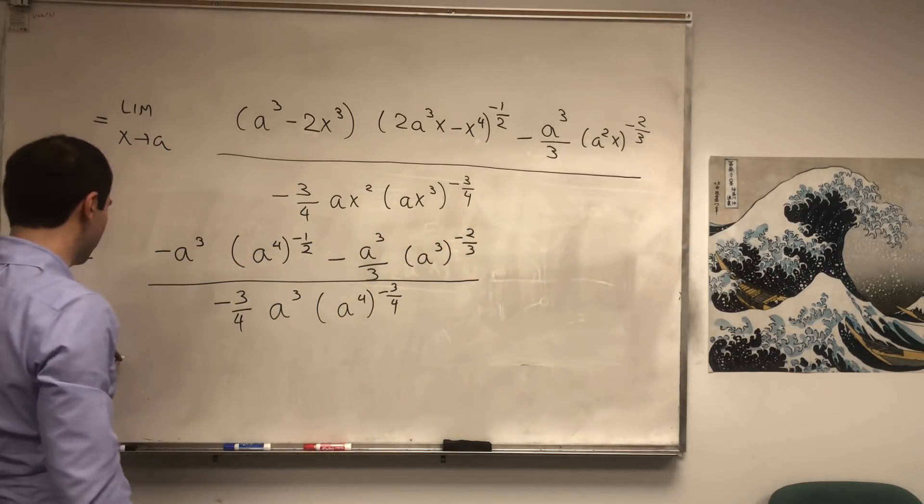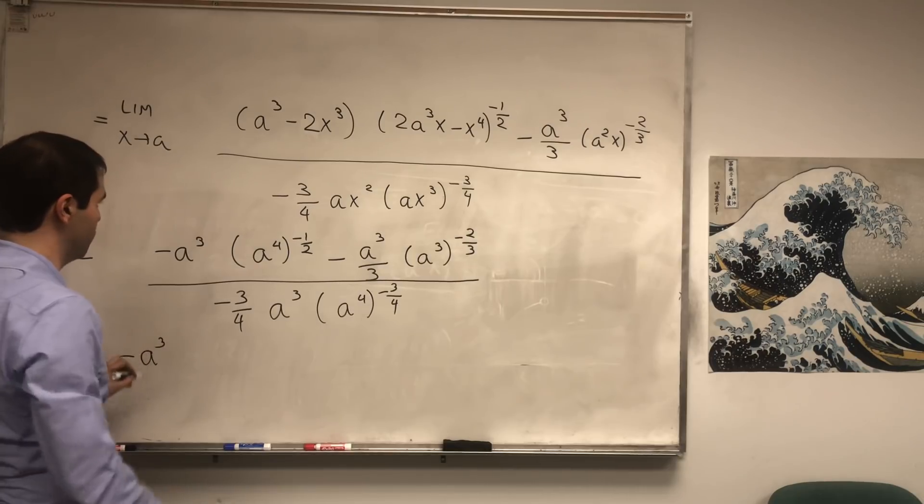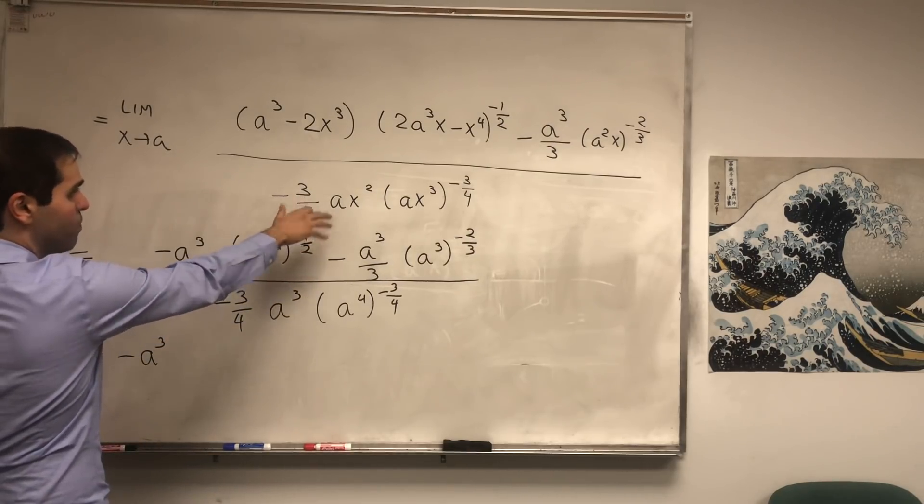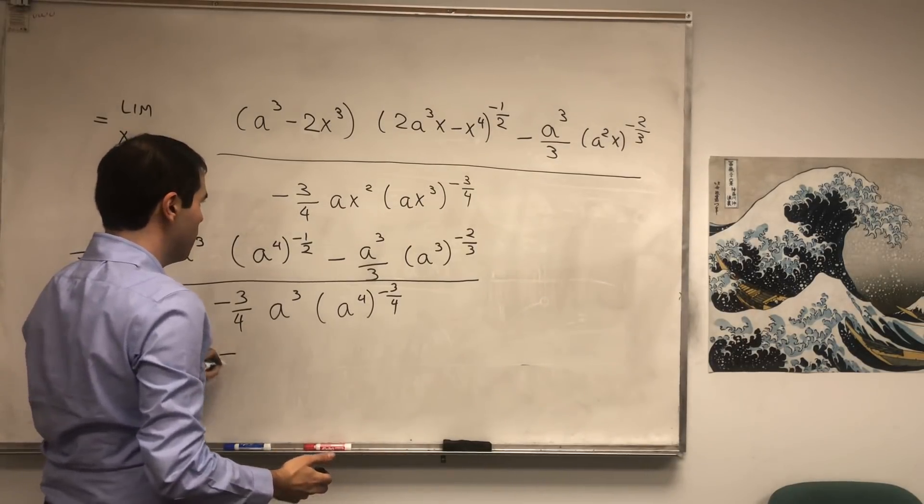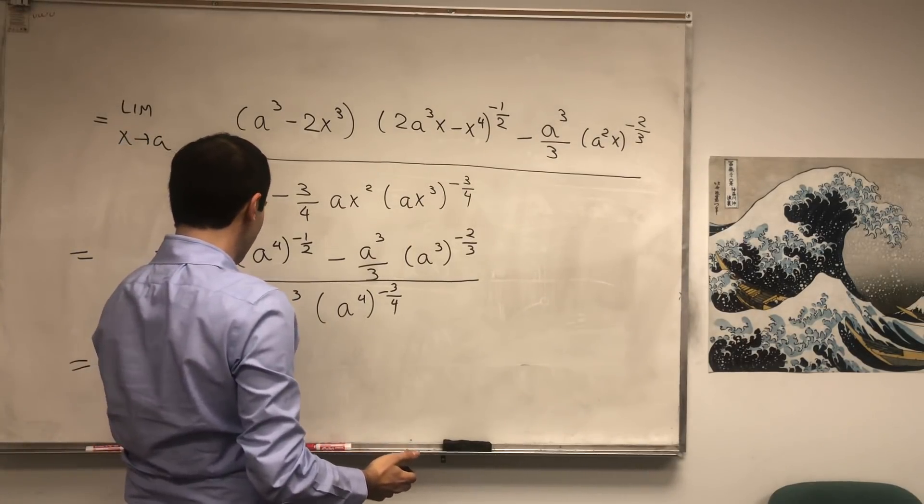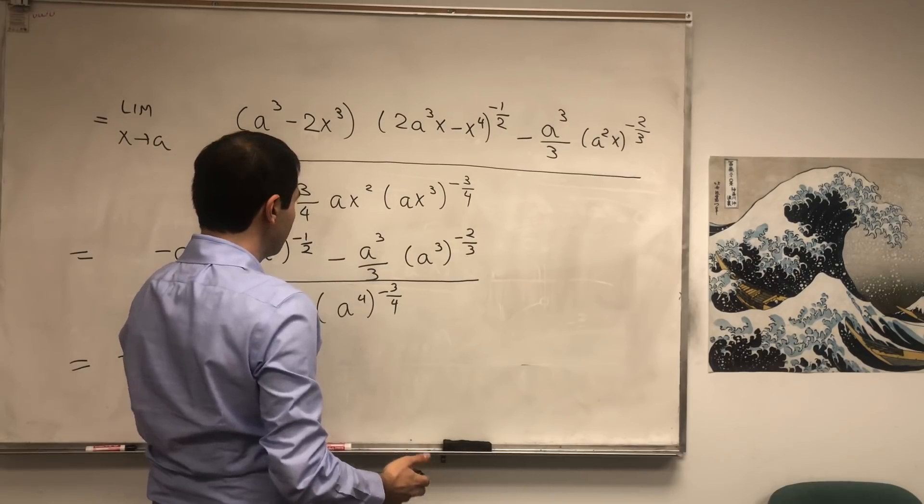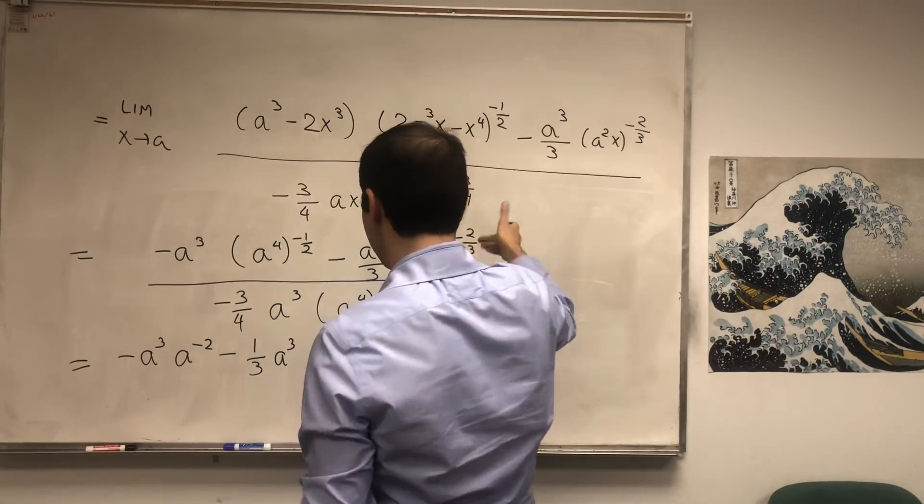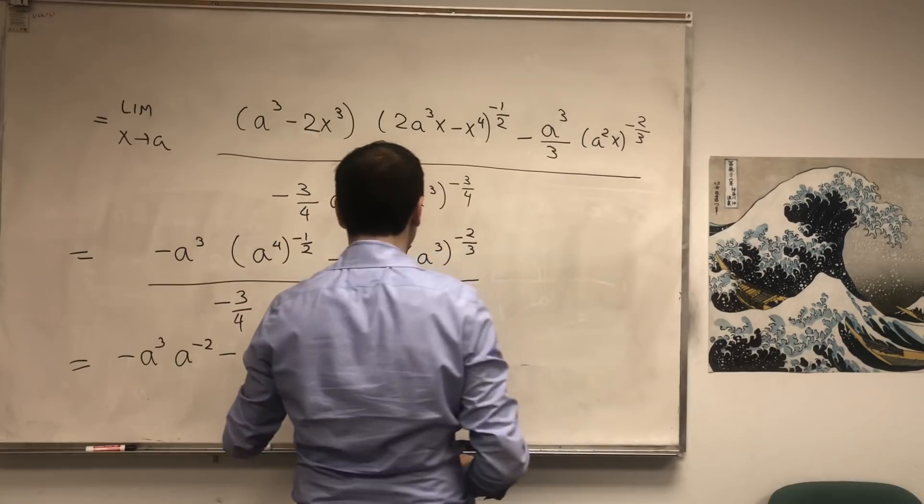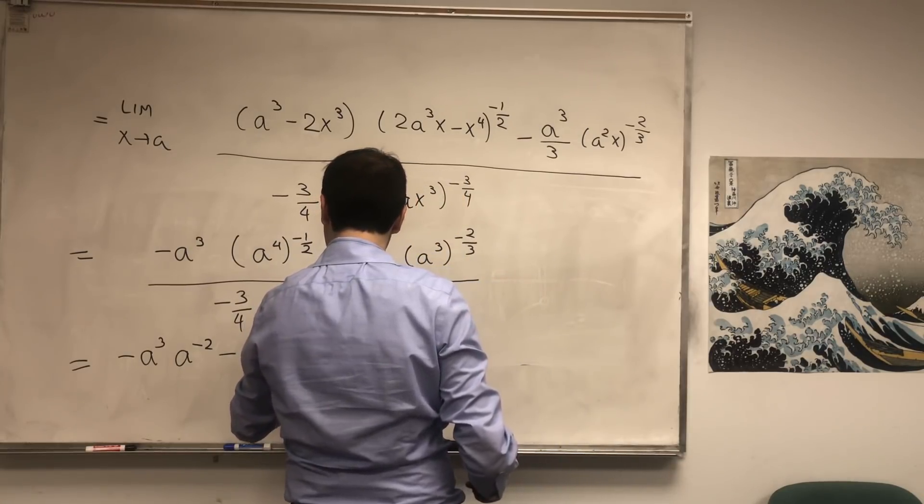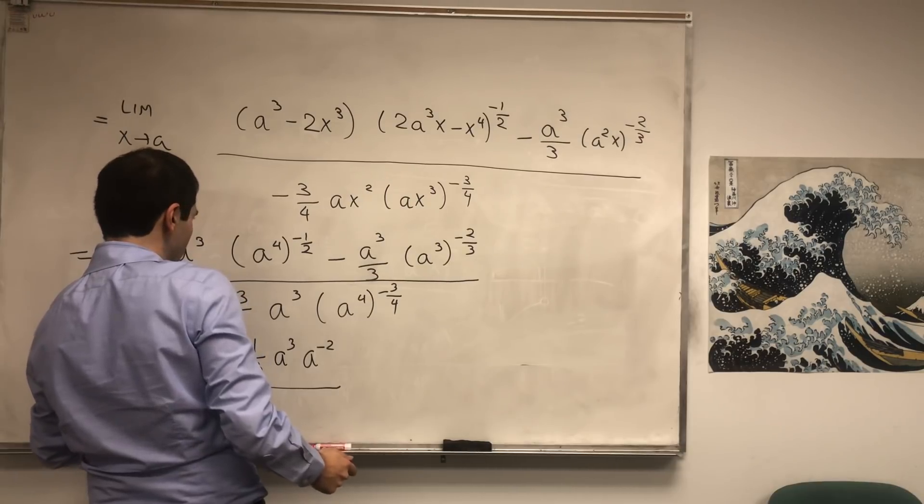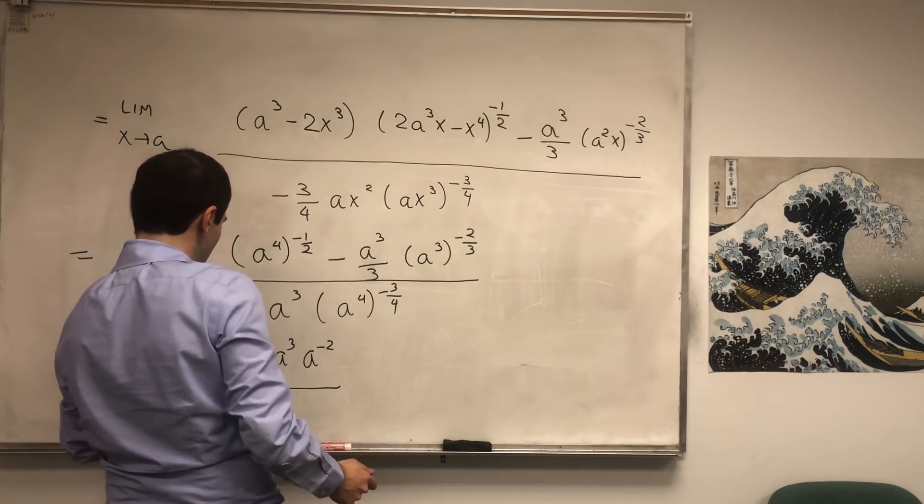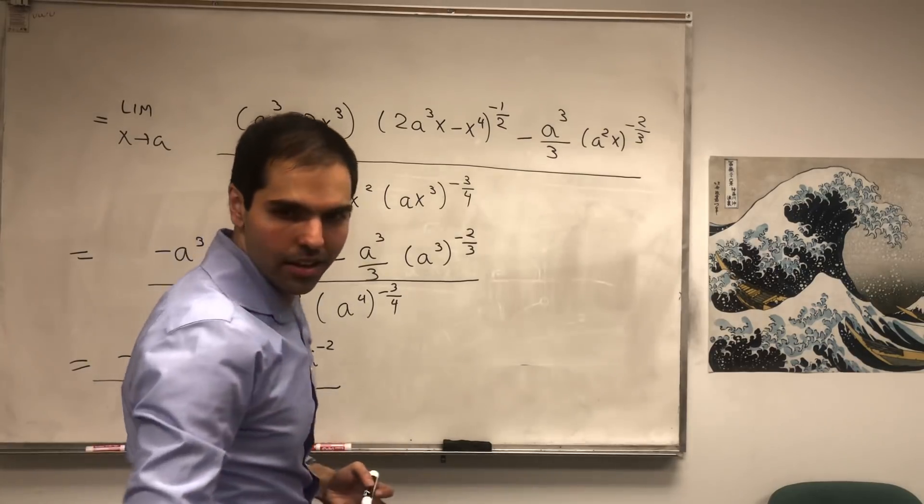And then what we end up with is minus a³ times (a⁴)^(-1/2), that's minus a, minus one-third a³ times a² times (a³)^(-2/3), that's a to the minus two, divided by minus three-quarters a³ and then a to the minus three.